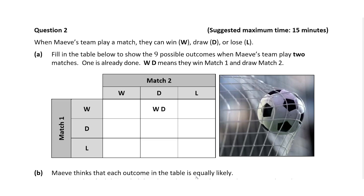We're told that when Maeve's team play a match they can either win, represented by W, draw, represented by D, or lose, represented by L. Question A asks us to fill in the table to show the nine possible outcomes when Maeve's team play two matches. WD, which is already done for us, means they win match one and draw match two.